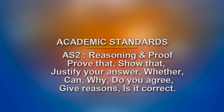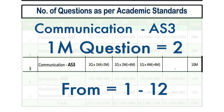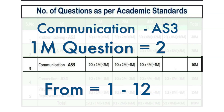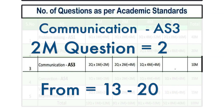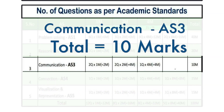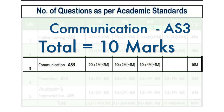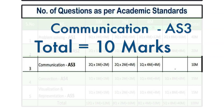For AS2 Reasoning and Proof, the question types include: prove that, show that, justify your answer, whether, can, why, do you agree — give reason, is it correct? These types of keywords indicate reasoning and proof questions.